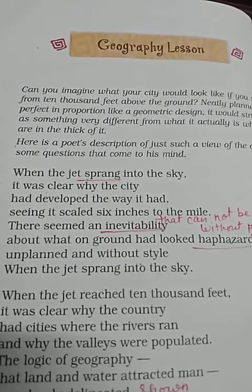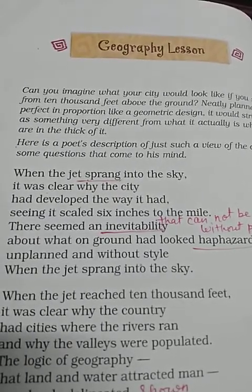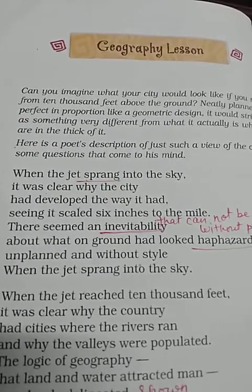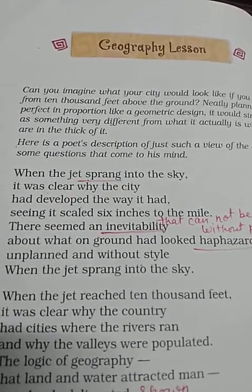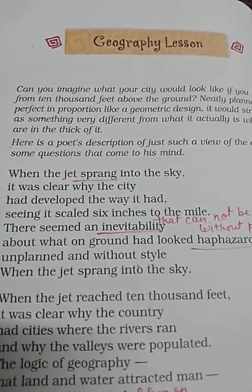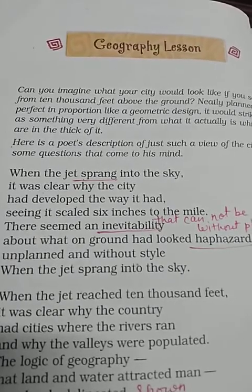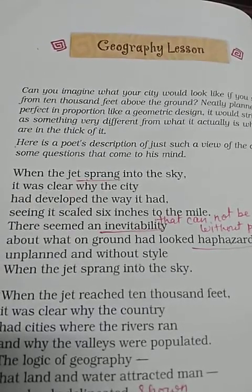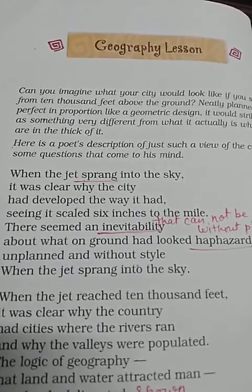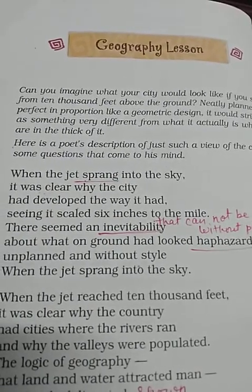The valleys were also populated, which fulfilled the needs of the people living in them. When the jet reached the height of about six miles, the poet understood that the earth has more water than land. Then he came to know that the people living on the earth are selfish and are with low mentality, for they hate each other. He found that the earth is one, but the people are divided and fail to live peacefully on this beautiful and unique planet.